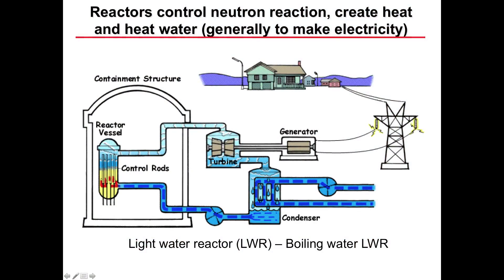If you have nuclear fuel down here in this nuclear core, and if you split the nuclei, the factor of millions creates lots of heat. If you have a system where that heat can go ahead and heat water, and the water can boil into steam, then the steam can drive a turbine and you can make electricity. This part looks just like any other power plant, but instead of burning coal through combustion, you burn the nuclear fuel by neutron reactions of fissioning that material.